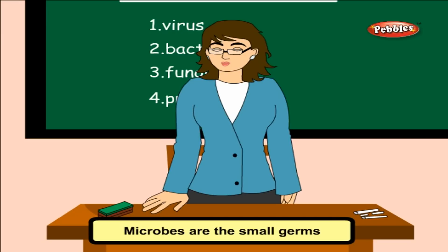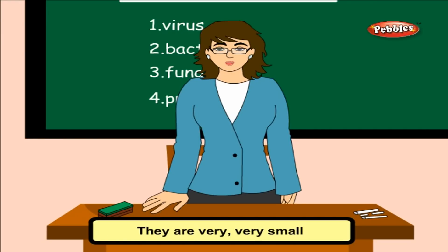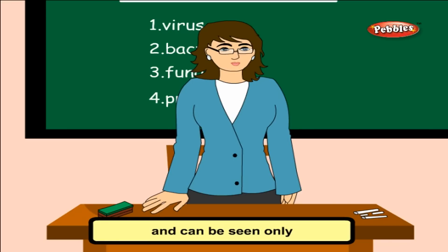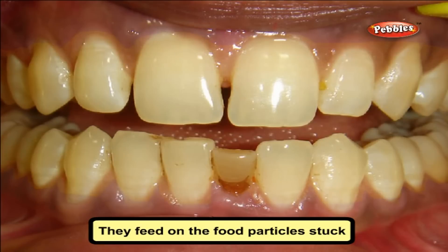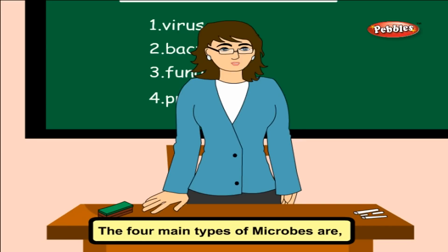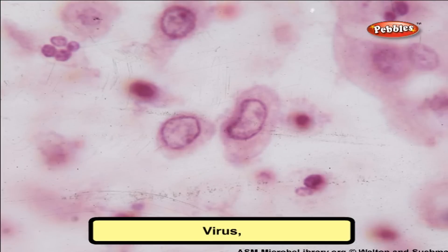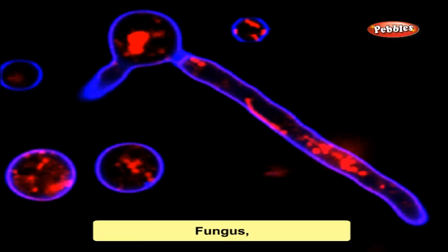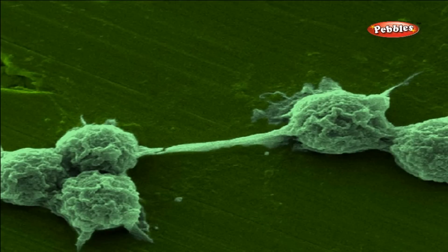Microbes are the small germs or bacteria that grow in the mouth. They are very small and can be seen only under the microscope, so they are called microbes. They feed on the food particles stuck on the teeth and decay it. The four main types of microbes are virus, bacteria, fungus and protozoa.